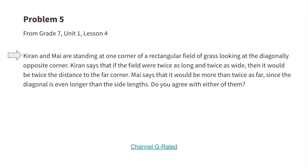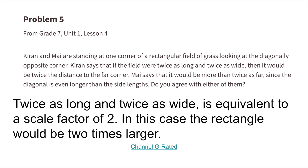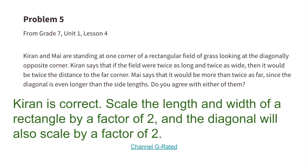Number 5. Kieran and Mai are standing at one corner of a rectangular field of grass, looking at the diagonally opposite corner. Kieran says that if the field were twice as long and twice as wide, it would be twice the distance to the far corner. Mai says it would be more than twice as far, since the diagonal is even longer than the side lengths. Twice as long and twice as wide is a scale factor of 2. Kieran is correct — scale the length and width of a rectangle by a factor of 2, and the diagonal will also scale by a factor of 2.